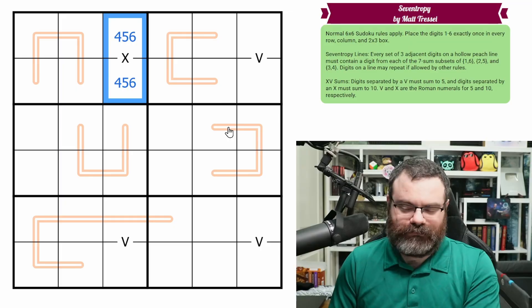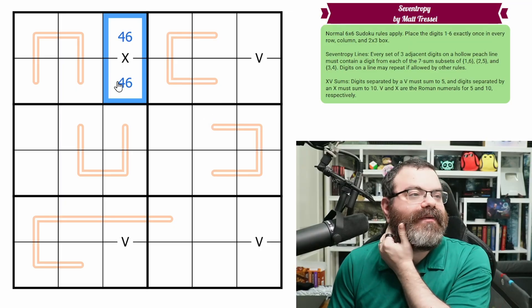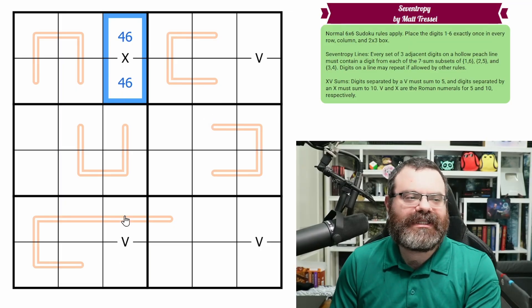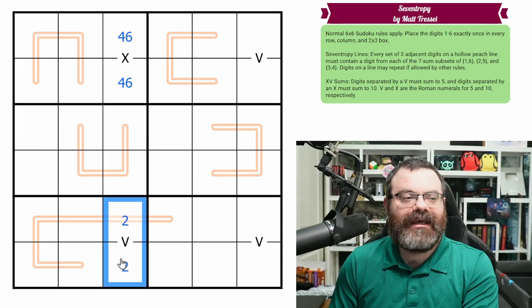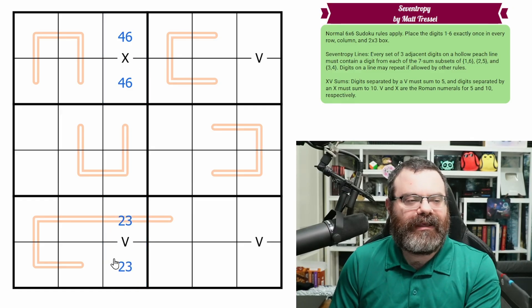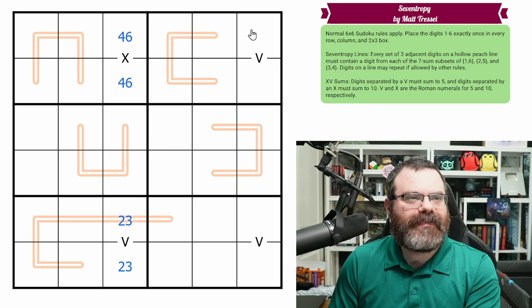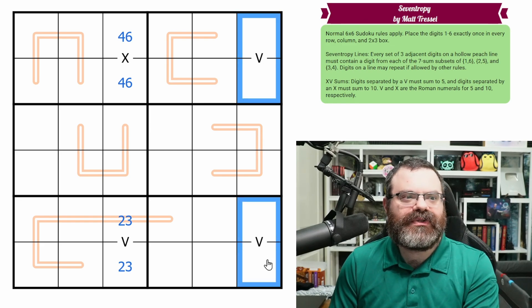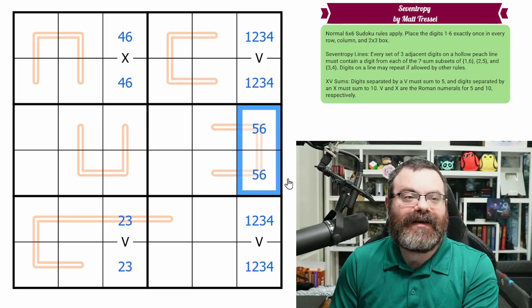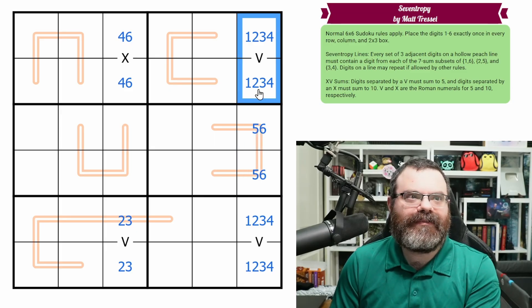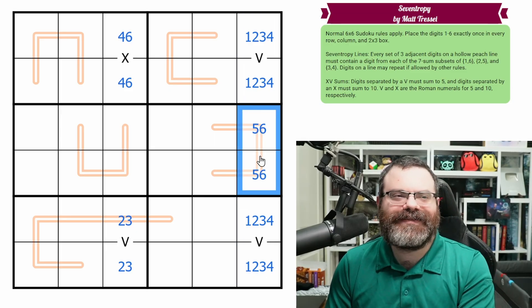All right, 10 is always 4, 6 in a 6x6. It's the only way we're adding to 10. And that 4, 6 is looking down here, telling us this can't be 1, 4. We'd use the 4. So this has to be 2, 3. Okay, and then these are the 1, 2, 3, and 4, which I'm shamelessly going to mark. Because that makes this a 5, 6 pair. You can't put 5 or 6 on a sum to 5. It doesn't work.